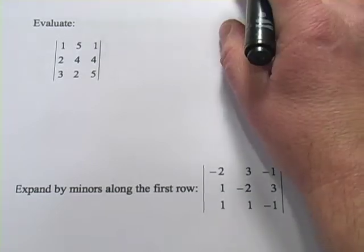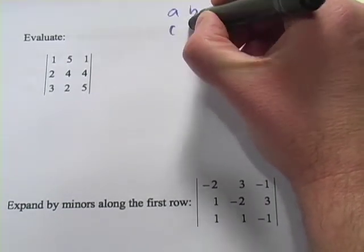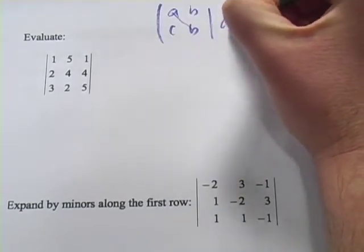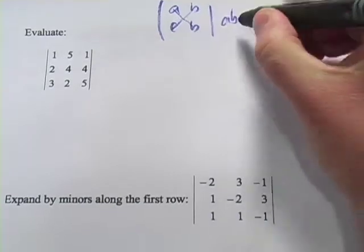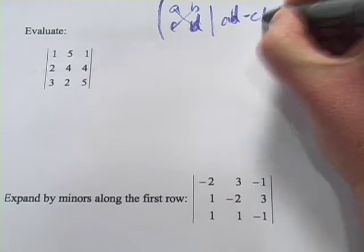And you probably remember how to evaluate the determinant of a 2 by 2 matrix. So if you've got A, B, C, D, you multiply down here A times D, and then you multiply up and you subtract, so A times D and C times B.